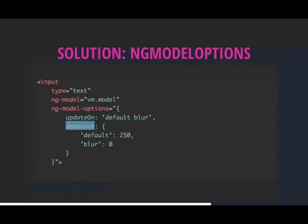Adding a debounce tells Angular when to run the digest cycle. Think of Gmail's search bar: if it had an ng-model and a thousand email watches, every keystroke would loop through all emails doing dirty checks. Stopping that with a debounce — only triggering when the user pauses or blurs — makes a huge difference. Without it, you'll see input lag on large data sets.